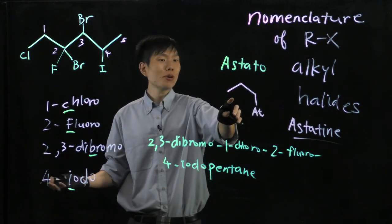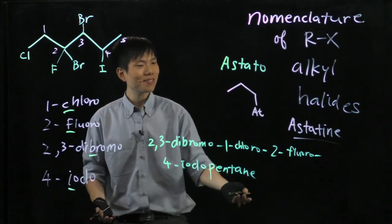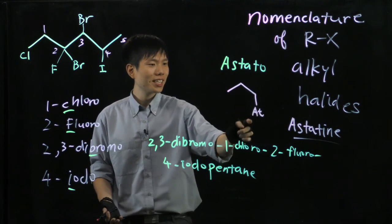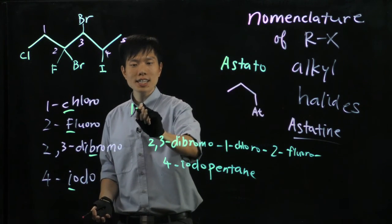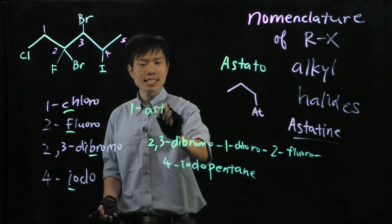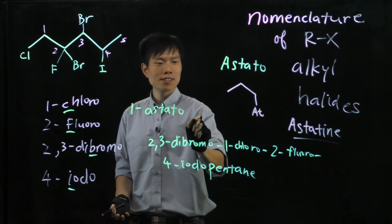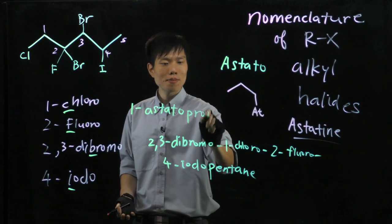So if we are posed this question to name this, not too difficult. Three carbon chain. Astatine on the first carbon. We call this 1-astatopropane.